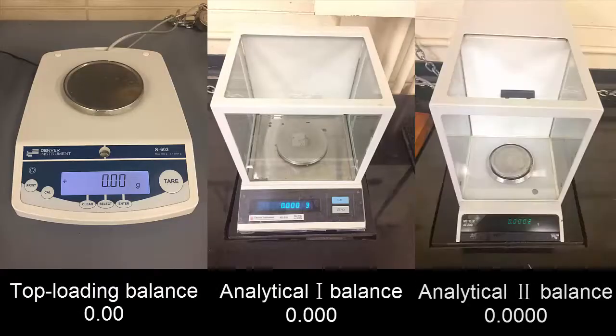Here are the different balance types you will find in the lab. The top loading balance weighs to only two decimal places. The two types of analytical balances have higher precision, weighing to three or four decimal places. Choose the appropriate balance required based on the precision required.